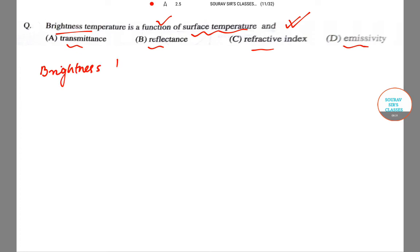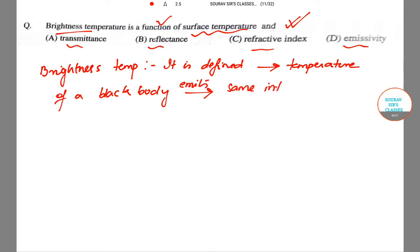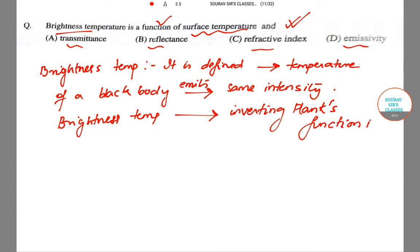Let us first define brightness temperature. It is actually defined as the temperature of a black body that actually emits the same intensity as measured. Brightness temperature is actually found by inverting Planck's function.